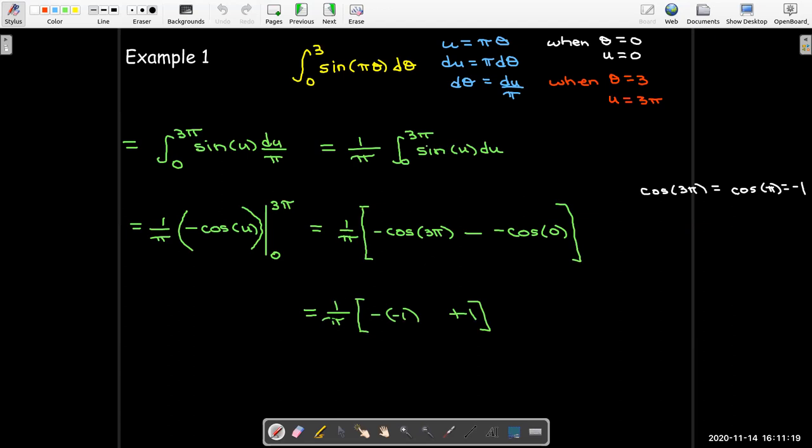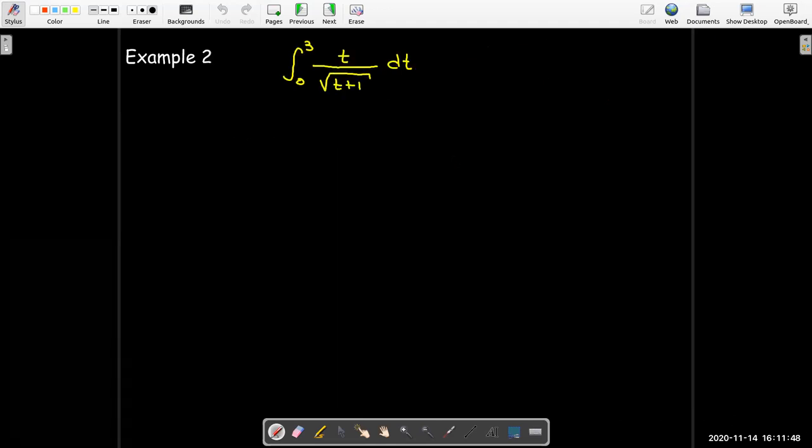So I still have the 1 over pi. I have the minus sign. And then negative 1 is what cosine of 3 pi equals. Over here, I just went ahead and I said, oh, this is minus 1, which will make a plus 1. So take care with all of these signs. And in fact, now it looks like inside the brackets, I'll have 1 plus 1, which will make 2 times 1 over pi, which is 2 over pi.